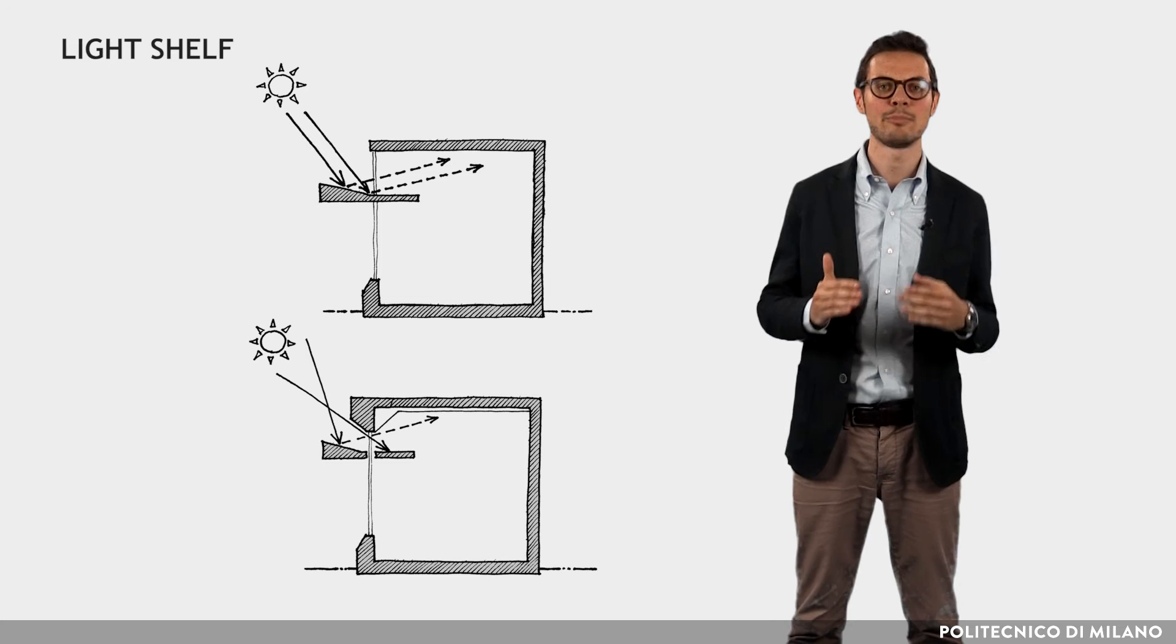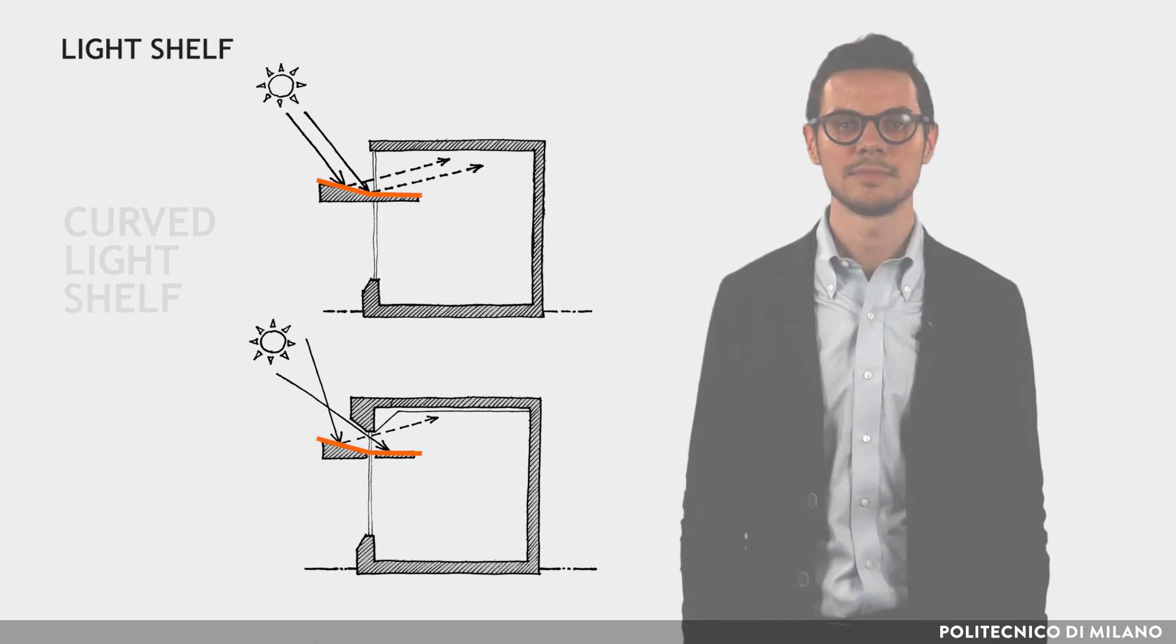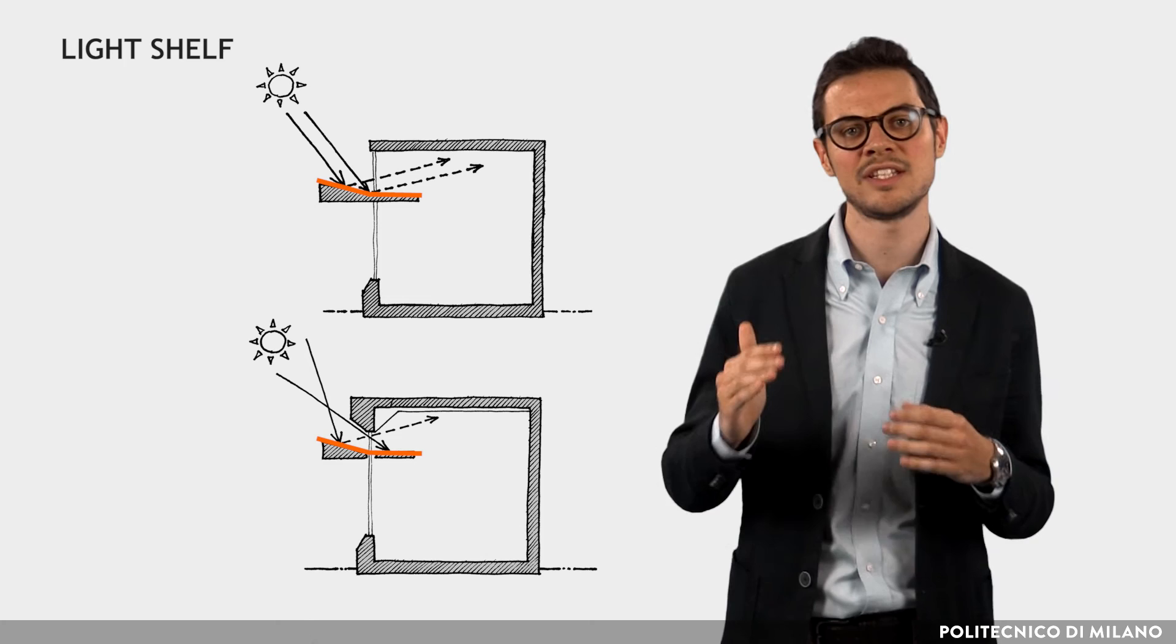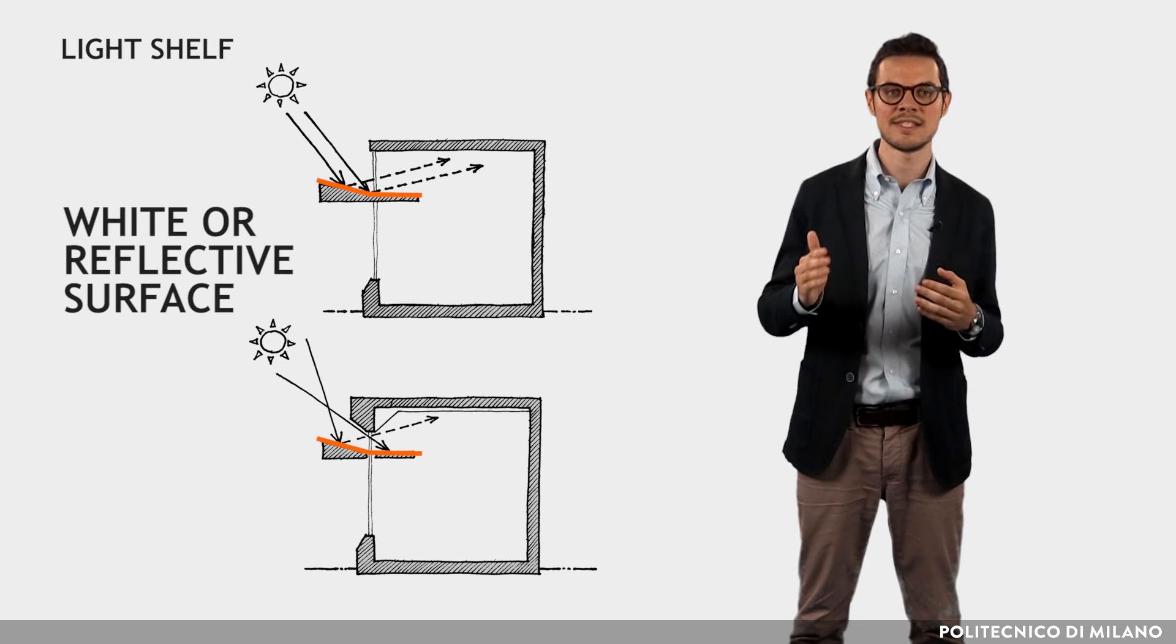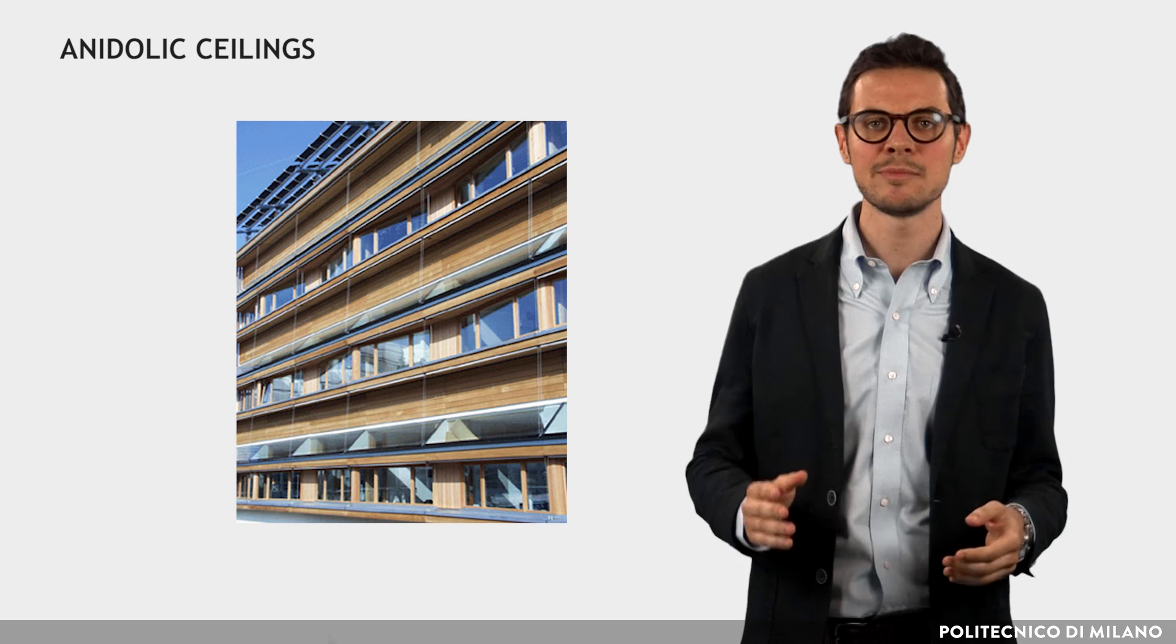The effectiveness of natural lighting with the light shelf can be increased appropriately by curving the surface hit by the sun's rays. The characteristics of the upper surface of the light shelf determine its effectiveness in all configurations. The surface must be white or reflective, and periodic maintenance is necessary to avoid losing its features.